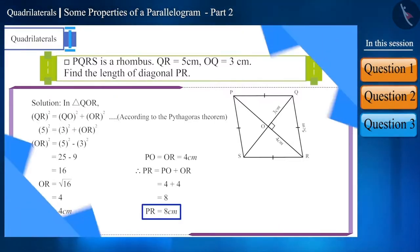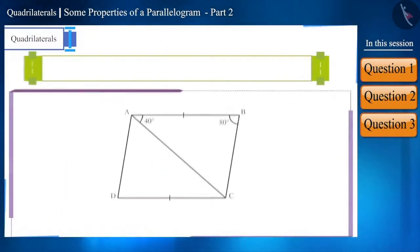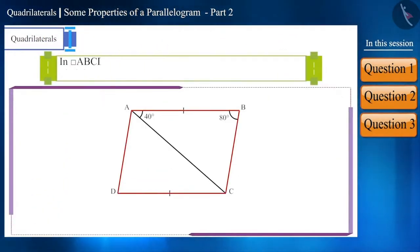Now, let's move to the last question of this session. In quadrilateral ABCD, side AB is parallel to side DC. Side AB is equal to side DC. Angle BAC equals 40 degrees and angle B equals 80 degrees. Find the values of angle DCA and angle D.